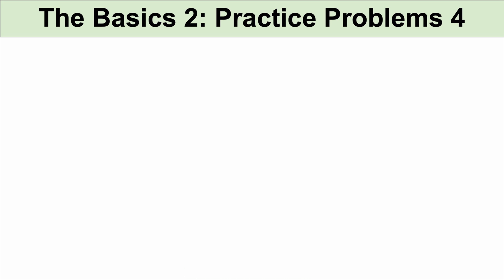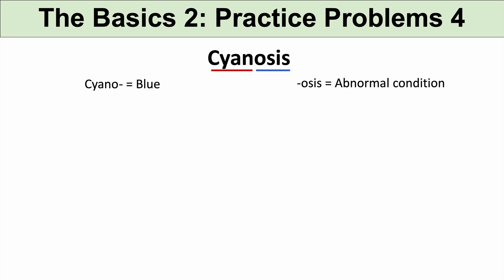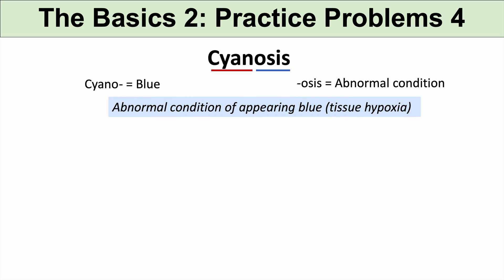The next practice problem is cyanosis. The prefix cyan or cyano means blue, the color blue. And the suffix osis means abnormal condition. So when we put this together, it means an abnormal condition of appearing blue, which is actually tissue hypoxia. Cyanosis means an abnormal condition of appearing blue.